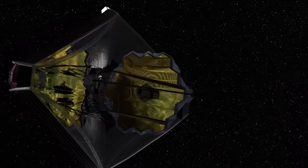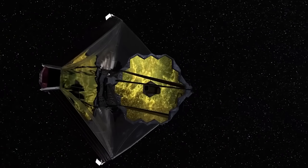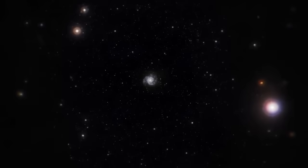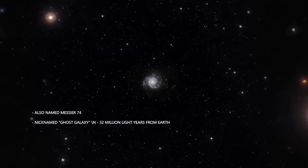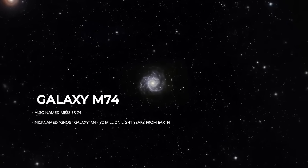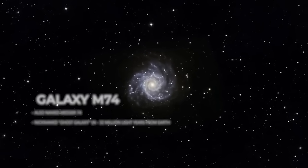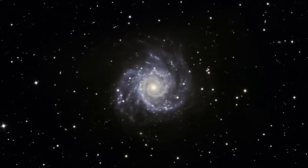Speaking of galaxies, the James Webb Telescope has observed a particularly impressive one, the galaxy M74, or Messier 74, nicknamed Ghost Galaxy. Why this nickname? Because of its low surface brightness, it is difficult to spot.